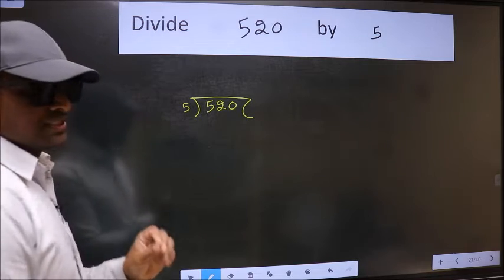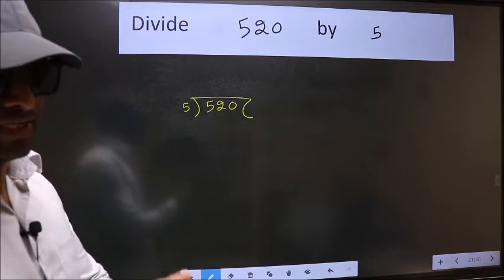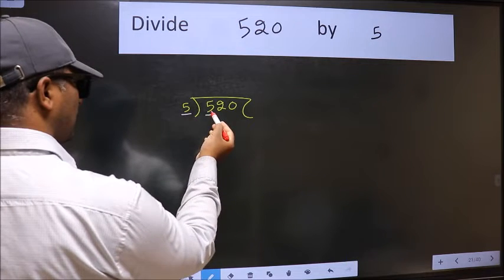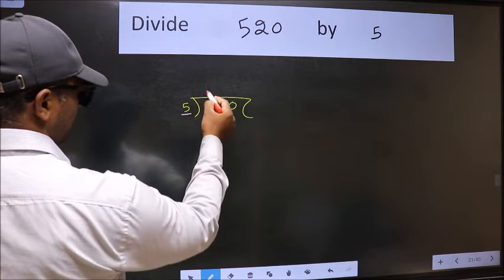This is your step 1. Here we have 5 and here also 5. When do we get 5 in the 5 table? 5 once is 5.